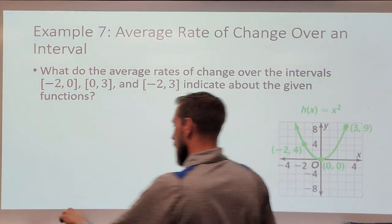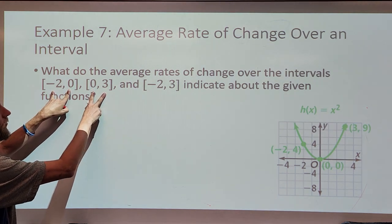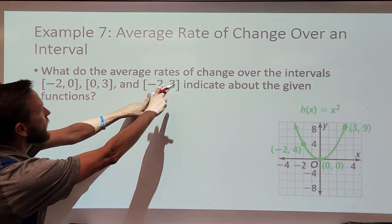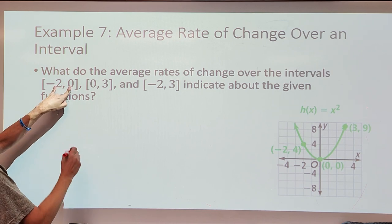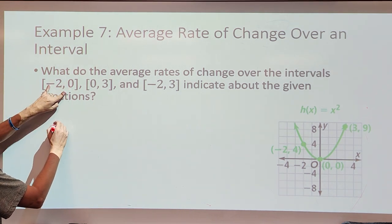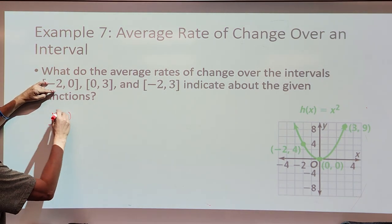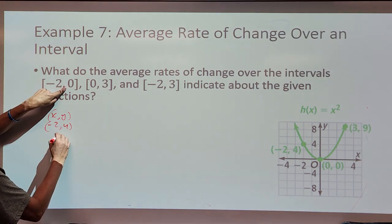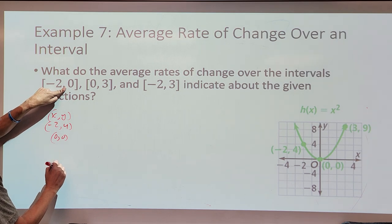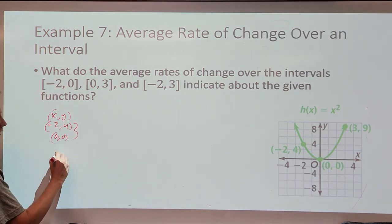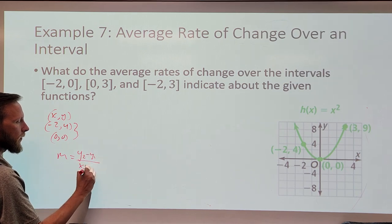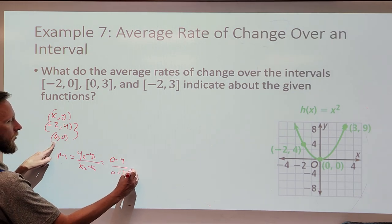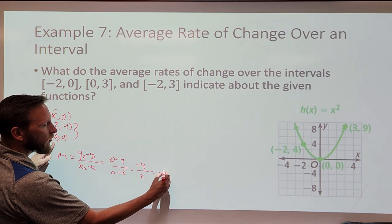Let's talk about the intervals here — from negative 2 to 0, from 0 to 3, and from negative 2 to positive 3. When I say from negative 2 to 0, at x equals negative 2 the output is 4, and at x equals 0 we have an output of 0. The difference in y's divided by the difference in x's gives us 0 minus 4 over 0 minus negative 2, which gives us negative 4 over positive 2, giving us negative 2 for my slope.